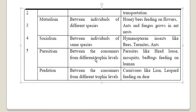Parasitism: one is at benefit and one is at harm. Parasites like head lice, mosquitoes, and bed bugs feed on humans — they suck human blood and get shelter on or inside human bodies. They are at benefit, but the human gets pain, infection, and becomes sick. One member is at benefit and the other is at harm — this is called parasitism.